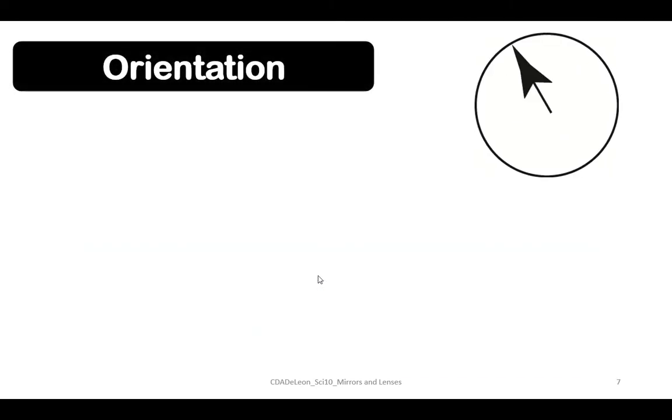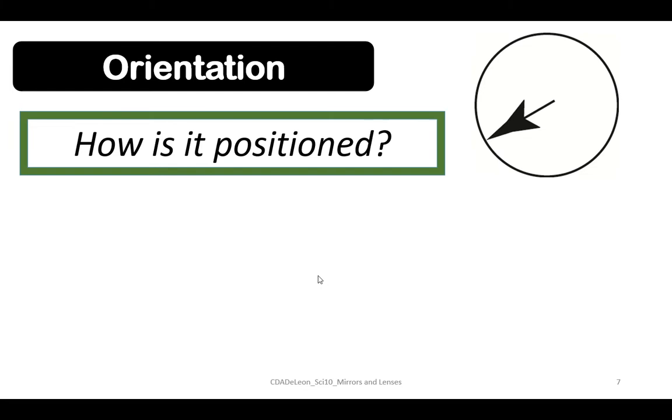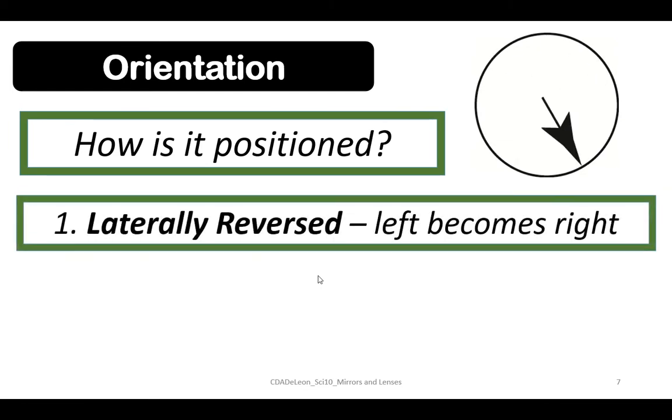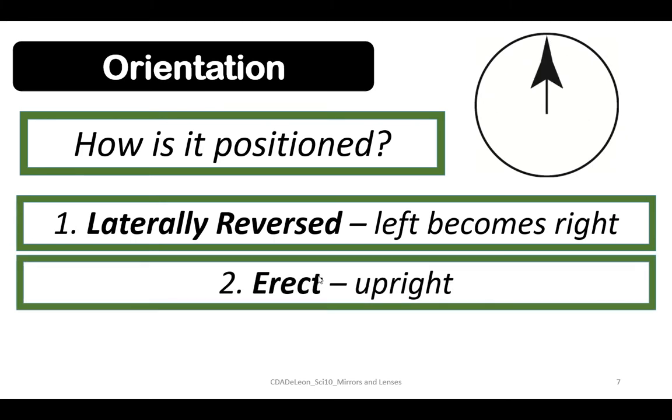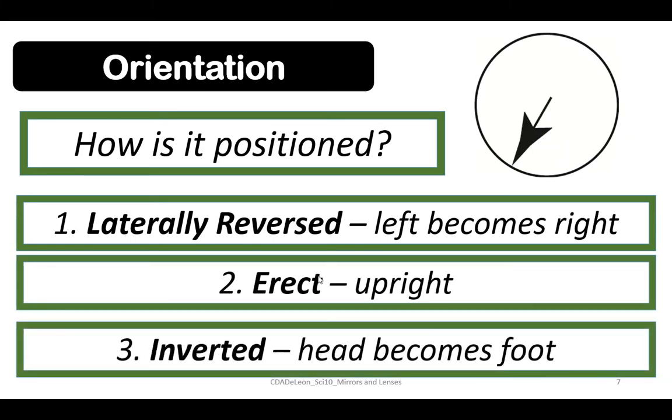Orientation is how it is positioned. You have three types of orientation: first is laterally reversed where left becomes right; second is correct, which is upright; and third is inverted, where head becomes foot.